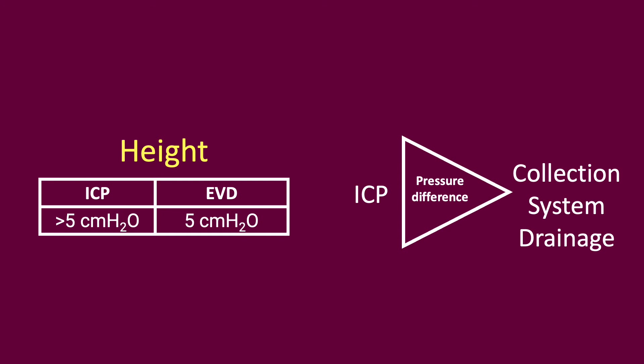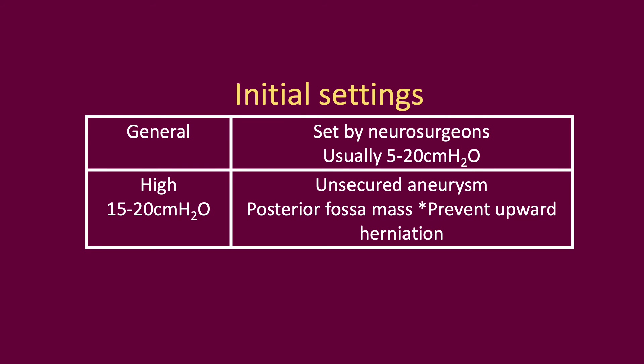The amount of CSF drainage depends on the pressure difference between the ICP and the height of the chamber. For example, if the EVD is set at 5cm of water and the ICP is greater than 5cm of water, CSF will flow into the low-pressure system — i.e. the EVD — thus enabling drainage. The height of the drainage system is usually determined by the neurosurgical team, typically between 5 and 20cm of water. High levels are indicated in patients with unsecured subarachnoid haemorrhage to prevent rapid CSF drainage and minimise changes in transmural pressure across the aneurysm, which can result in re-bleeding.